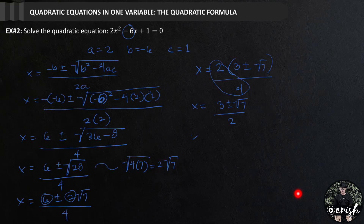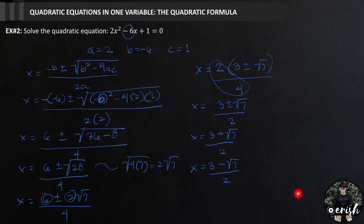For the first value of x, 3 plus square root of 7 over 2, and x equals 3 minus square root of 7 over 2.